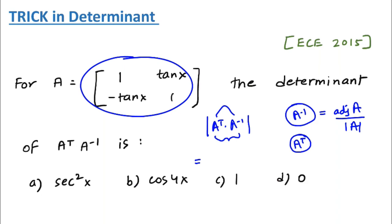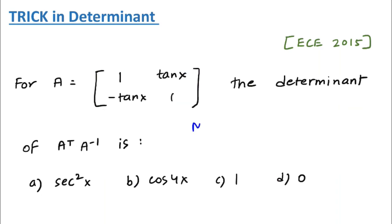Then you can solve the question and also you can use some property of determinant to avoid matrix multiplication. You can see here we have matrix multiplication. You can avoid that using the property of determinant. Whenever you have two matrices multiplied and you have to find the determinant of that, you can split the determinant. So the answer would be determinant of A transpose into determinant of A inverse.